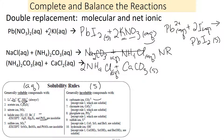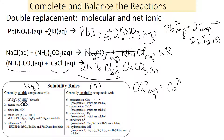For the net ionic equation, we leave out the aqueous ammonium piece. From the first compound, we don't write ammonium — just CO3 2− aqueous. From the second compound, we leave out chloride — just Ca2+ aqueous. Together they give CaCO3 solid. That is our net ionic equation.